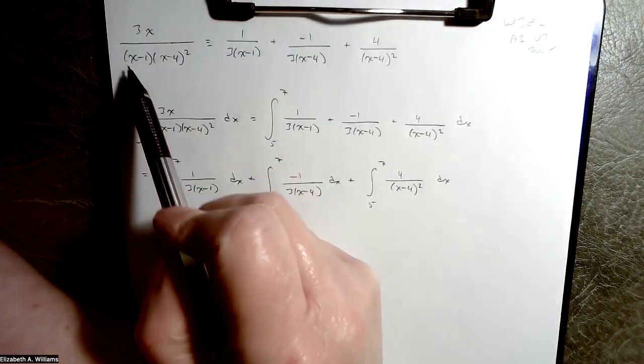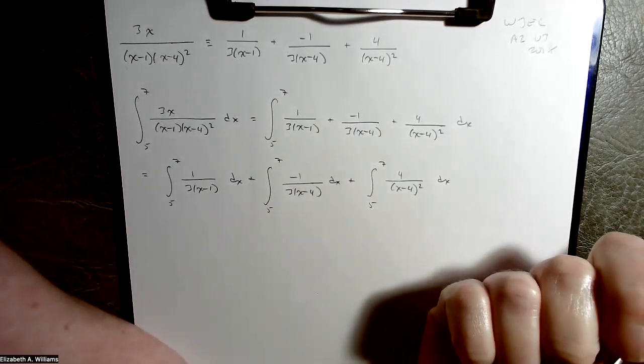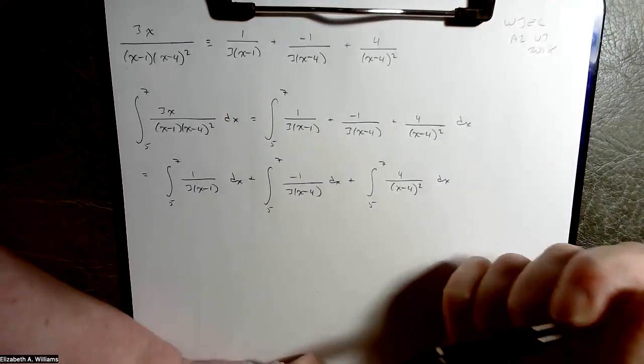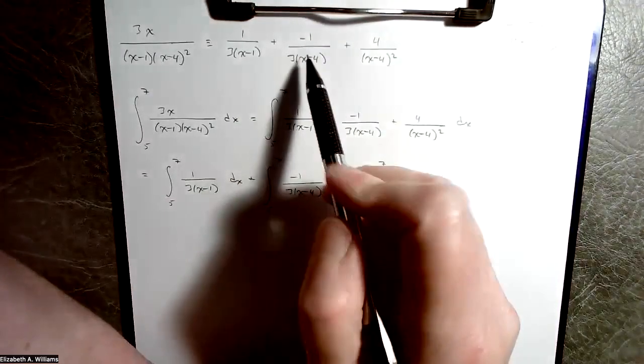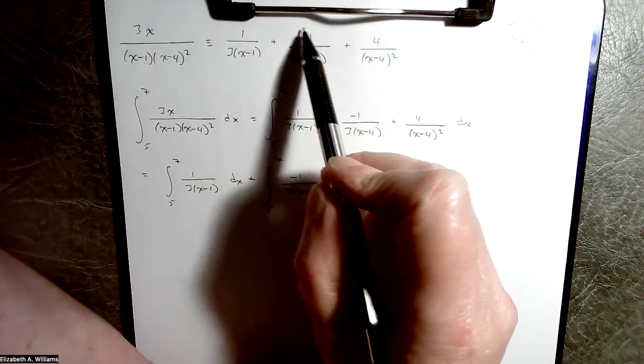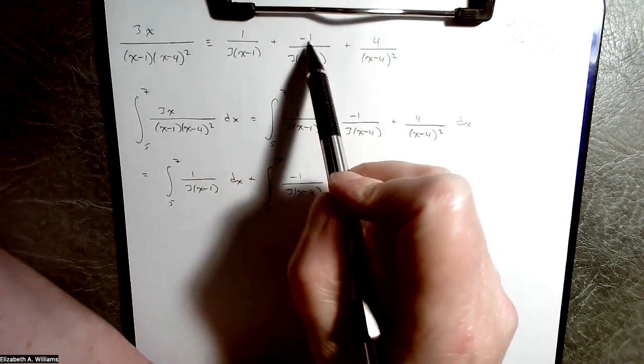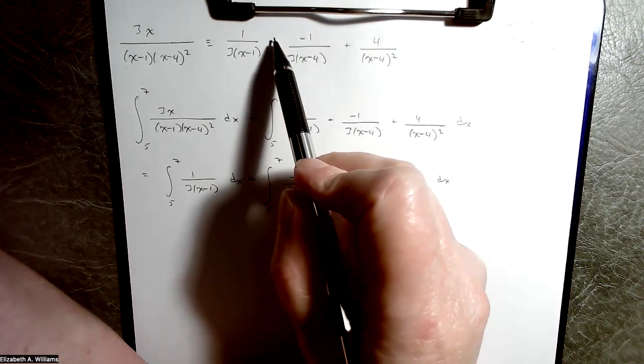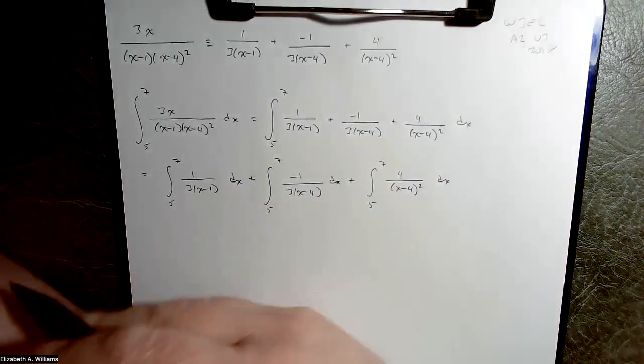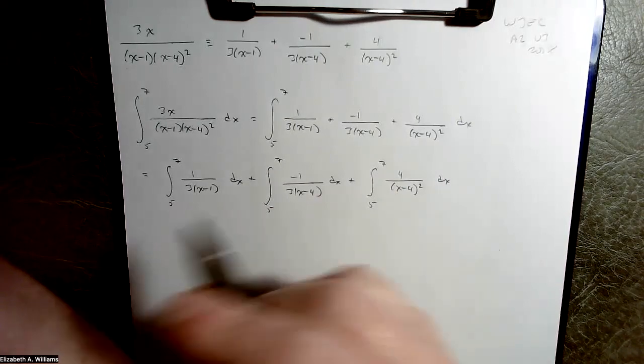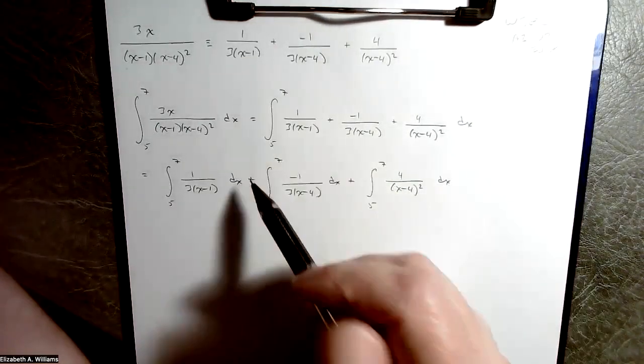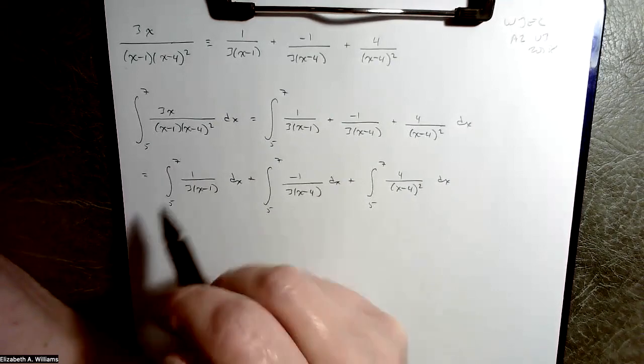So the first part is, here's a fraction, please split it apart into partials. And that's the result that you get. You have a style choice whether you want to keep that as minus 1 and add your fraction, or make that subtract with a positive 1 on your fraction.